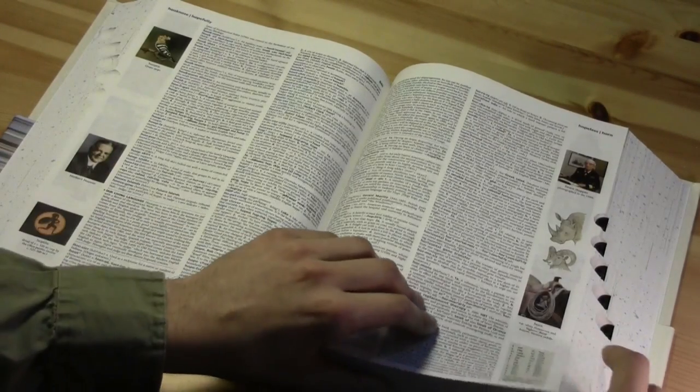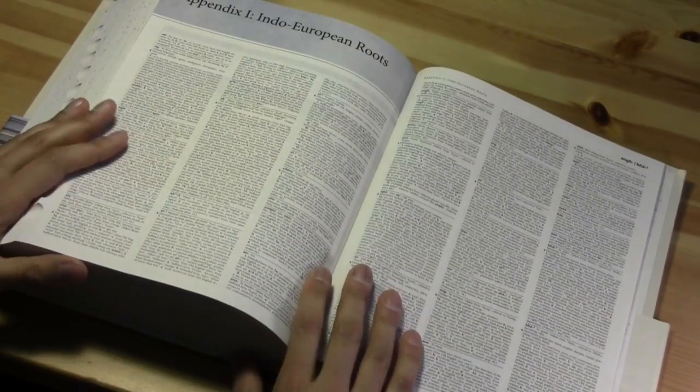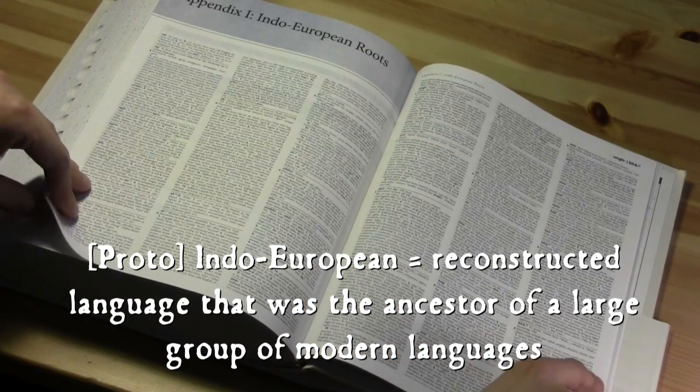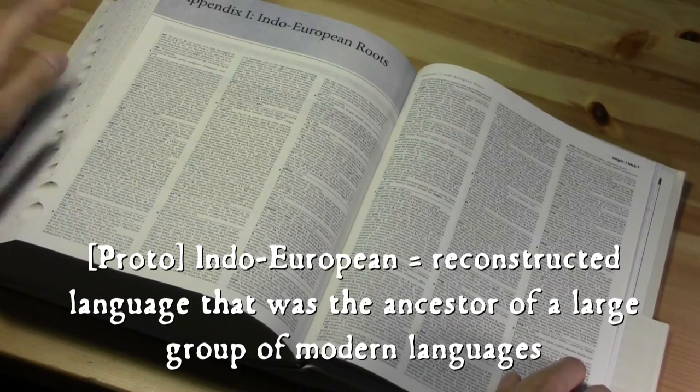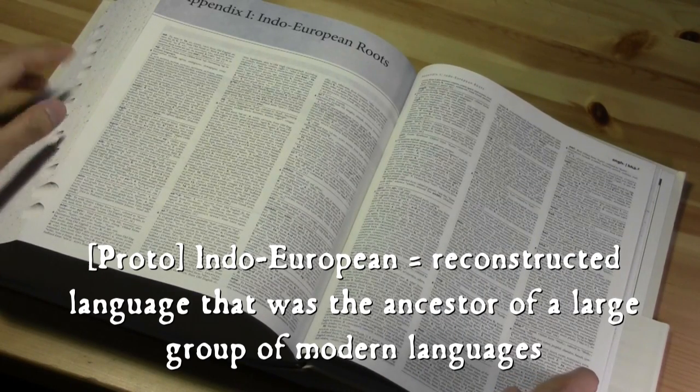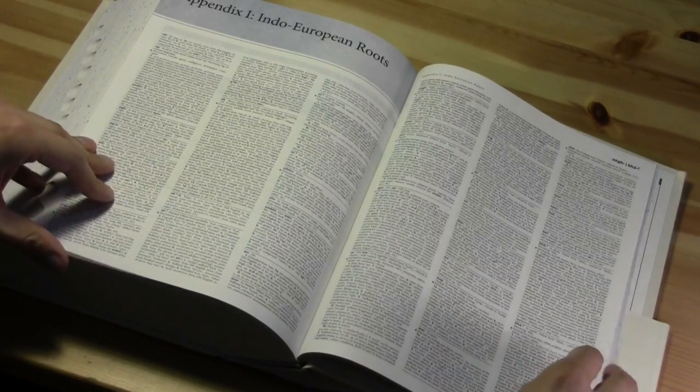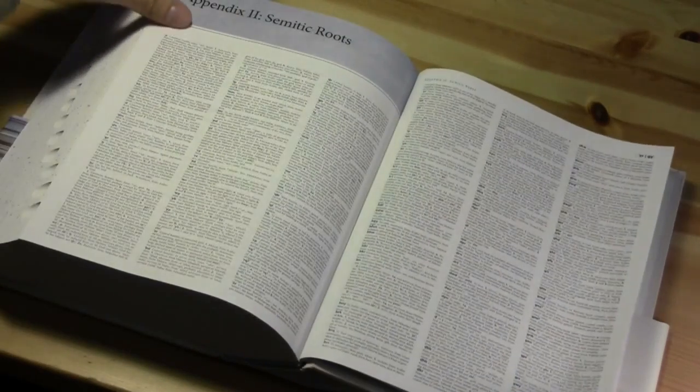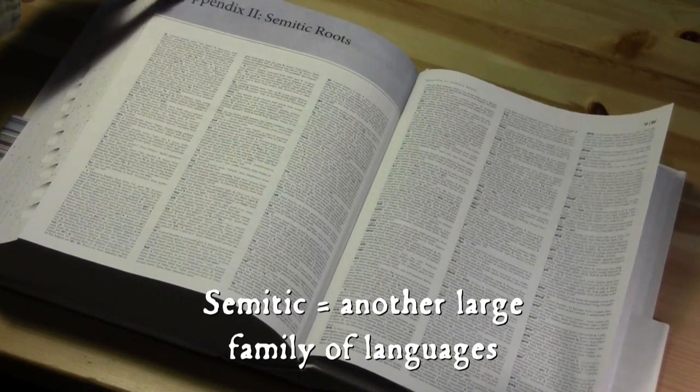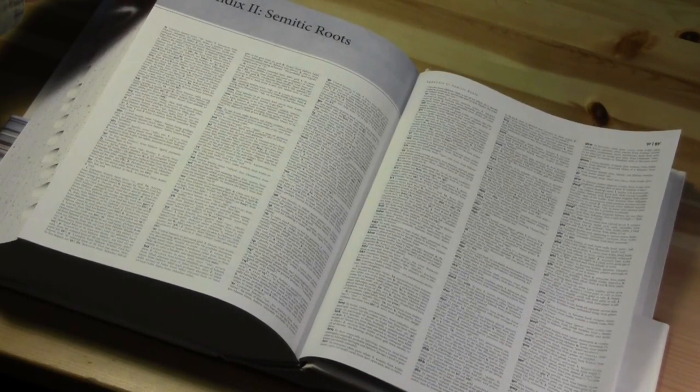And it is also notable for its appendix. So if we flip to the end of the book. So this is appendix one, Indo-European roots. So this lists all of the Indo-European roots that are connected to the etymologies in the main part of the dictionary. So the main part of the dictionary will give you the etymology, and then it will point you to the Indo-European root, which you can then look up in the back of the book. Here it is, Semitic root. So that wasn't there in the first edition. That didn't come in until the fourth edition. But we have it here in the fifth edition as well.